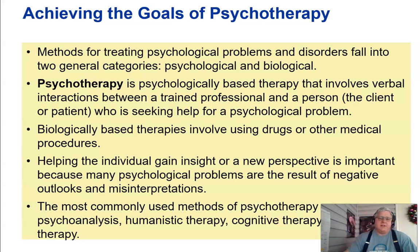Methods for treating psychological problems and disorders fall into two general categories: psychological and biological. Psychotherapy is a psychologically-based therapy that involves verbal interactions between a trained professional and a person — the client or patient — seeking help for a psychological problem. Biologically-based therapies involve using drugs or other medical procedures. The most commonly used methods of psychotherapy are psychoanalysis, humanistic therapy, cognitive therapy, and behavior therapy.